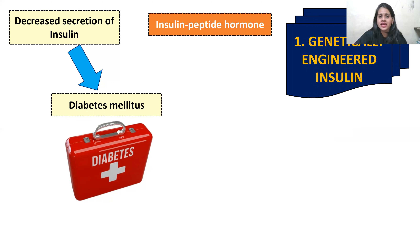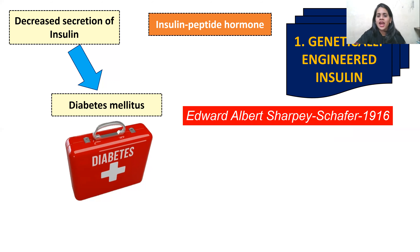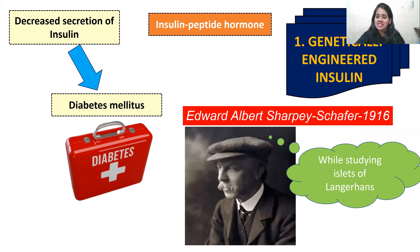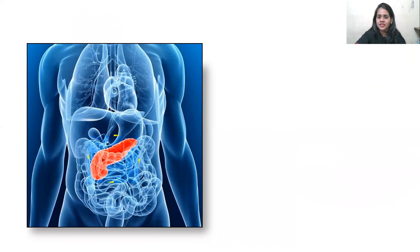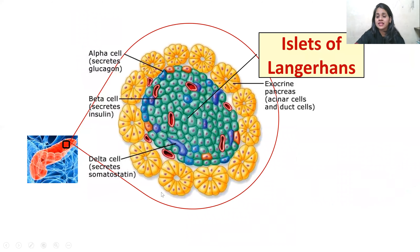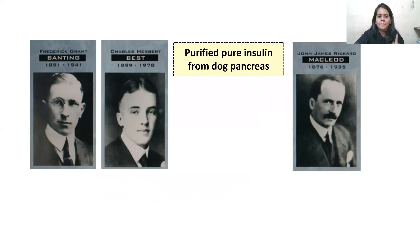Insulin is a peptide hormone. Edward Albert Sharpey-Schäfer, in 1960, was the one who recognized insulin accidentally when he was studying the islets of Langerhans. It's a longer name — Edward Albert Sharpey-Schäfer — but remember it because it's very important for your NEET exams. The pancreas is the organ which secretes insulin, specifically the islets of Langerhans.